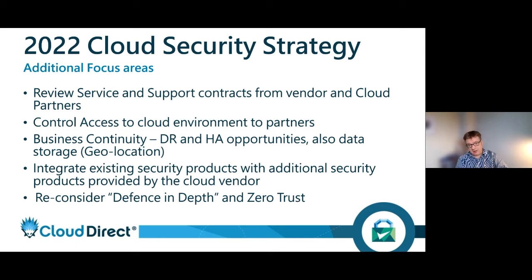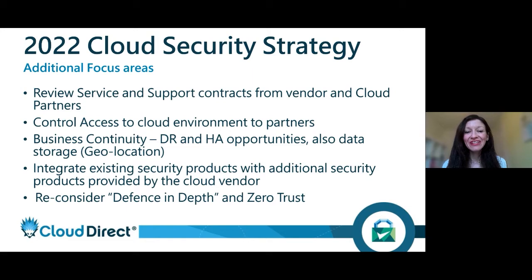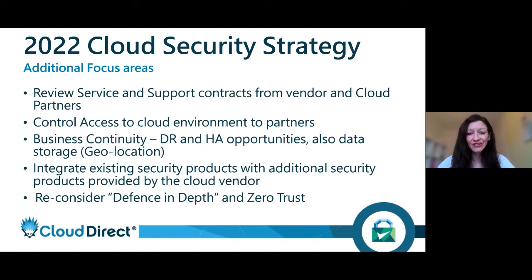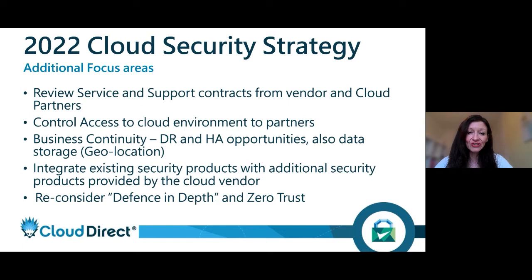Controlling access to your cloud environment for any third parties that need to access your services is really quite important. Any security you already have in place for that on-premises environment really needs to be considered as you migrate those services into the cloud. Security for third-party access needs to be as robust as what you had on-prem, ideally even more secure, because the last thing you want is someone accessing your services and being able to break into other parts and applications hosted in that cloud.